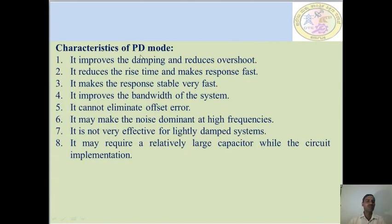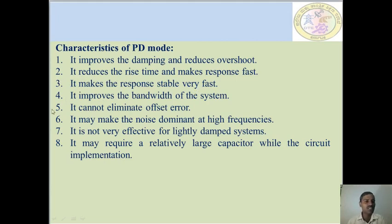The characteristics of proportional derivative control are as follows. First, it improves the damping and reduces the overshoot. Second, it reduces the rise time and limits the response path. Third, it makes the response stable very quickly. Fourth, it improves the bandwidth of the system. Fifth, it cannot eliminate offset error. It is also not very effective for systems with likely damping system rates.